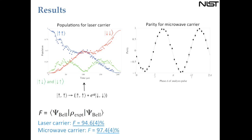We measure populations: spin-up/spin-up, spin-down/spin-down, and one-up/one-down. For our particular states, this corresponds to two bright ions, two dark ions, and one ion bright. You can see the populations evolving: we start in the up-up state, and with time the up-up population comes down, the down-down comes up. At a certain point we have roughly equal population of spin-up and spin-down, with a minimum in the one-ion-bright population.